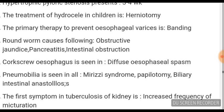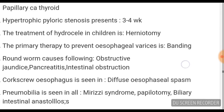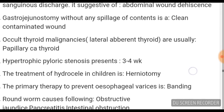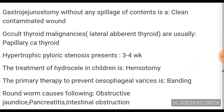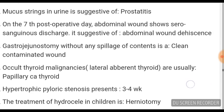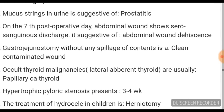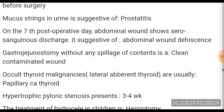Pneumobilia is seen in all of the following: Mirizzi syndrome, papillotomy, and biliary-intestinal anastomosis. Treatment of hydrocele in children is herniotomy. The primary therapy to prevent oesophageal varices is banding. Occult thyroid malignancies, that is lateral aberrant thyroid, are usually papillary carcinoma of the thyroid.